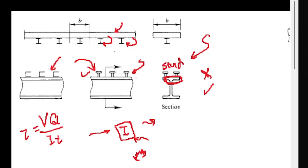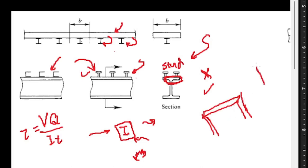Practically speaking, how do we erect these composite structures? The skeletal steel structure — columns, beams, and connections — is erected first, followed by the installation of studs on the beams. Then the concrete slab is cast. The concrete slab cannot be cast on air; it needs to be shored, and there are two possibilities for this which we'll discuss later.